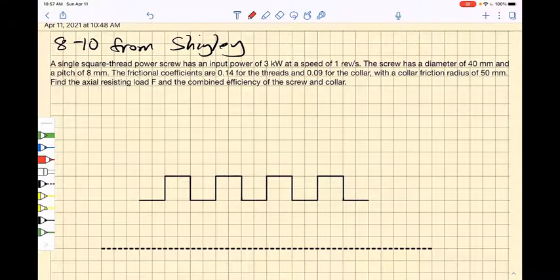The screw has a diameter of 40 millimeters and a pitch of 8 millimeters. The frictional coefficients are 0.14 for the threads and 0.09 for the collar, with a collar friction radius of 50 millimeters. Find the axial resisting load F and the combined efficiency of the screw and collar.